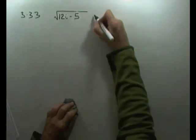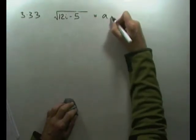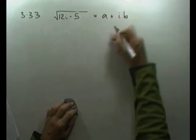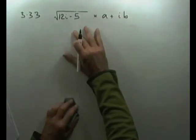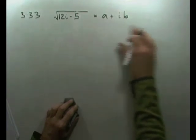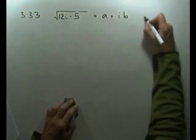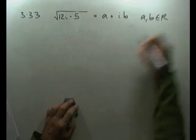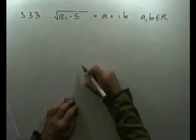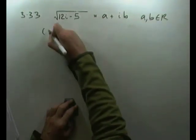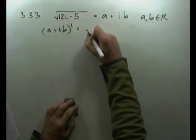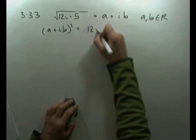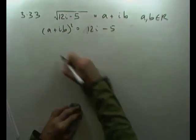Same for this one. Let the square root be a + ib, not changing it into polar form and using DeMoivre's, but doing it by quadratics. Let that equal a + ib, where a and b are real coefficients. Squaring both sides, (a + ib)² = 12i - 5.